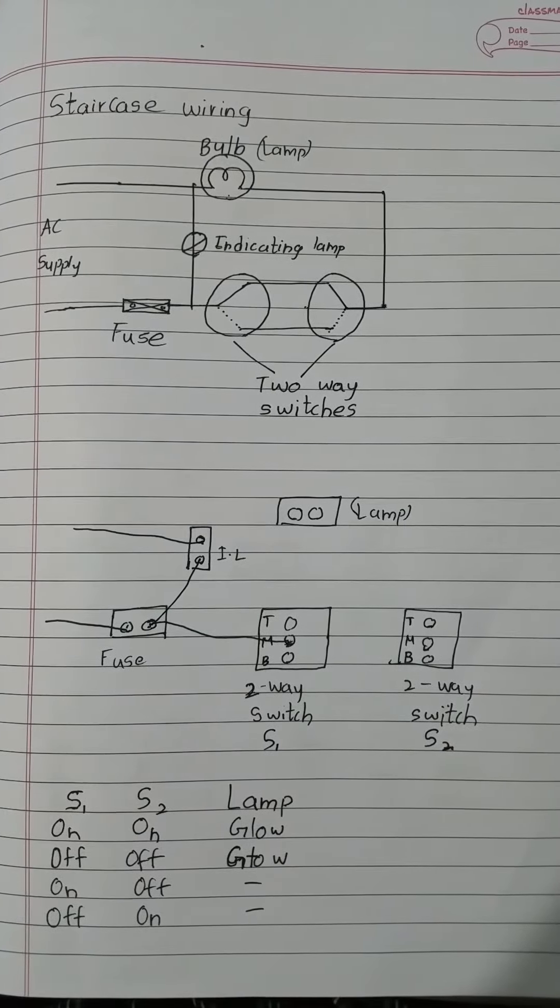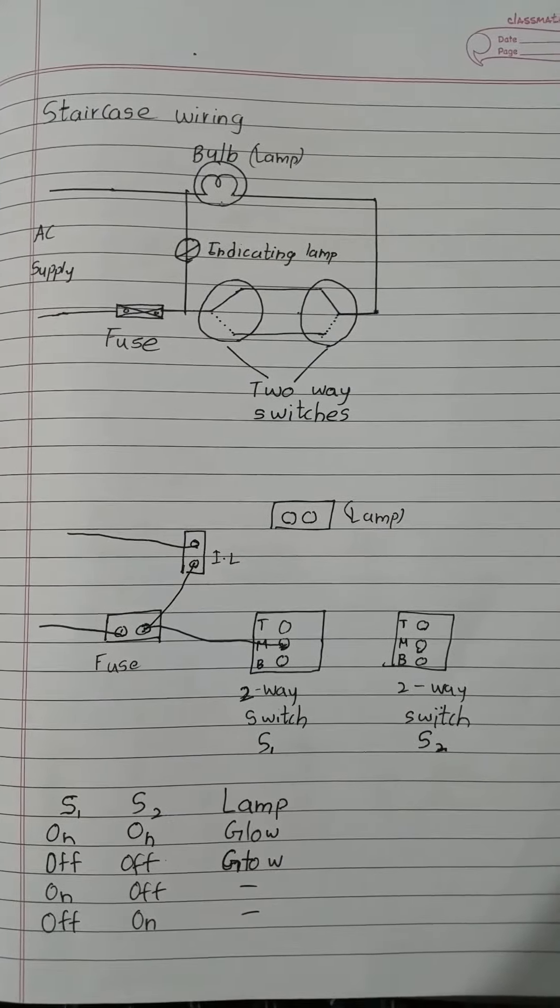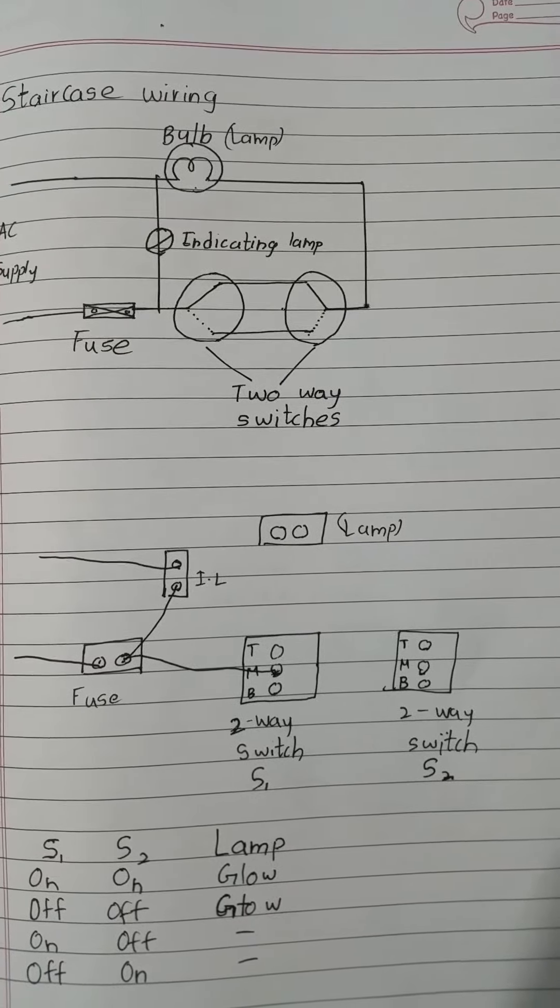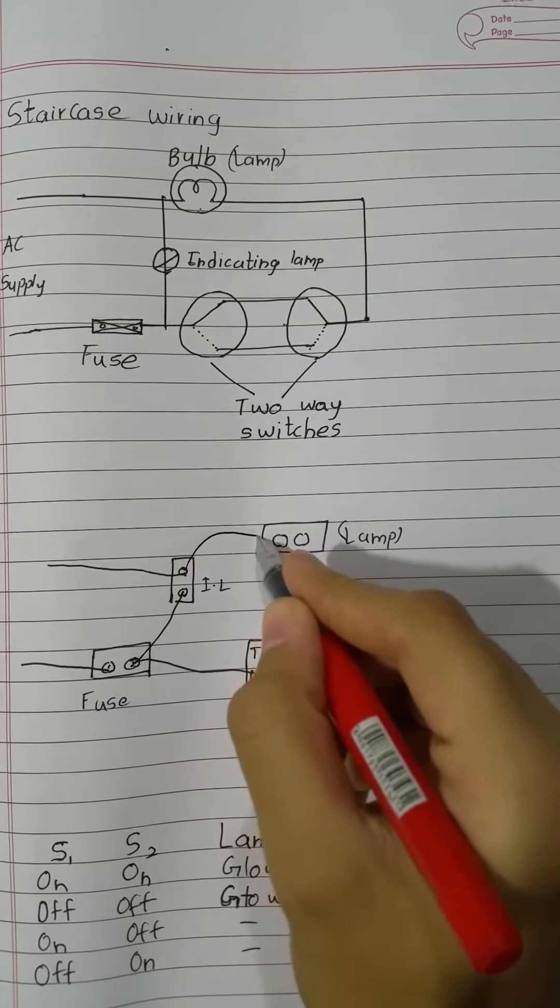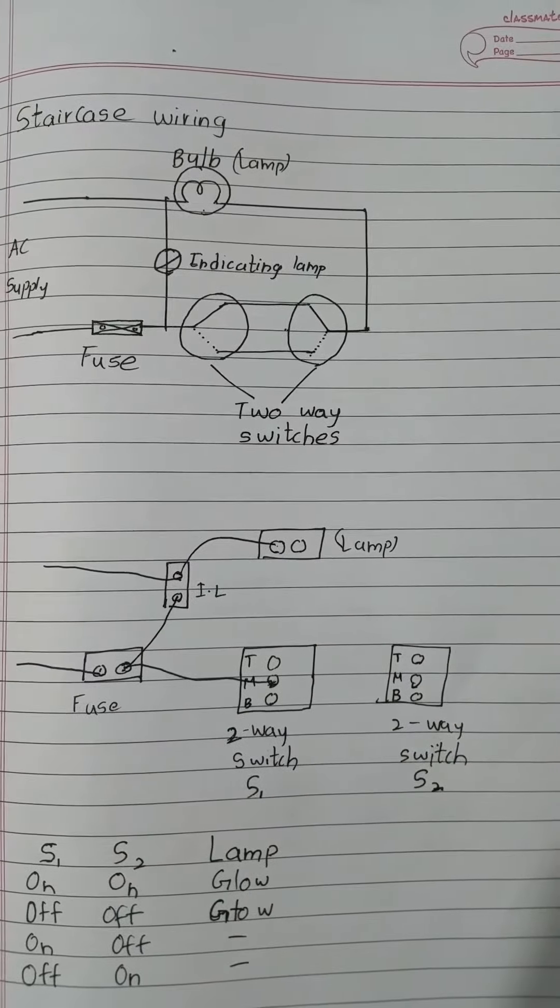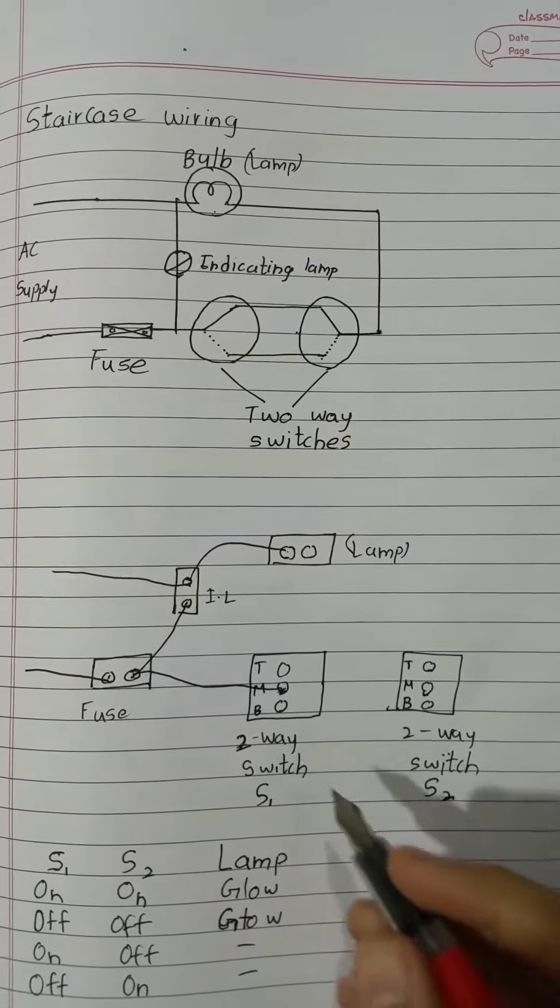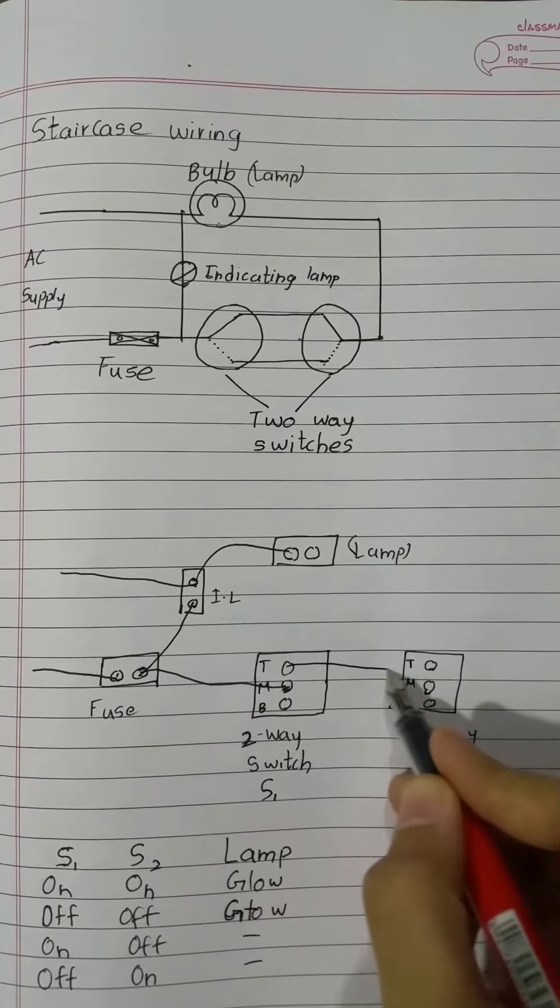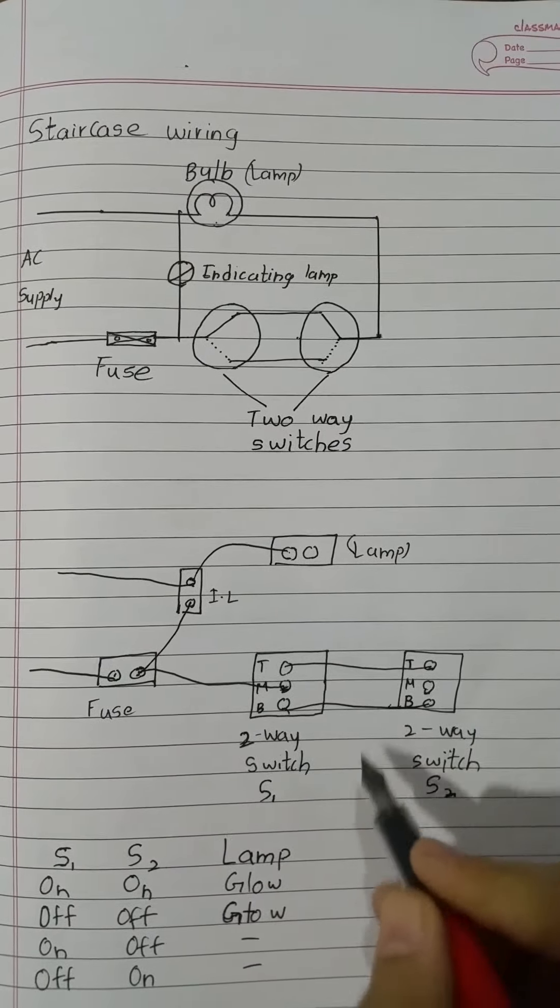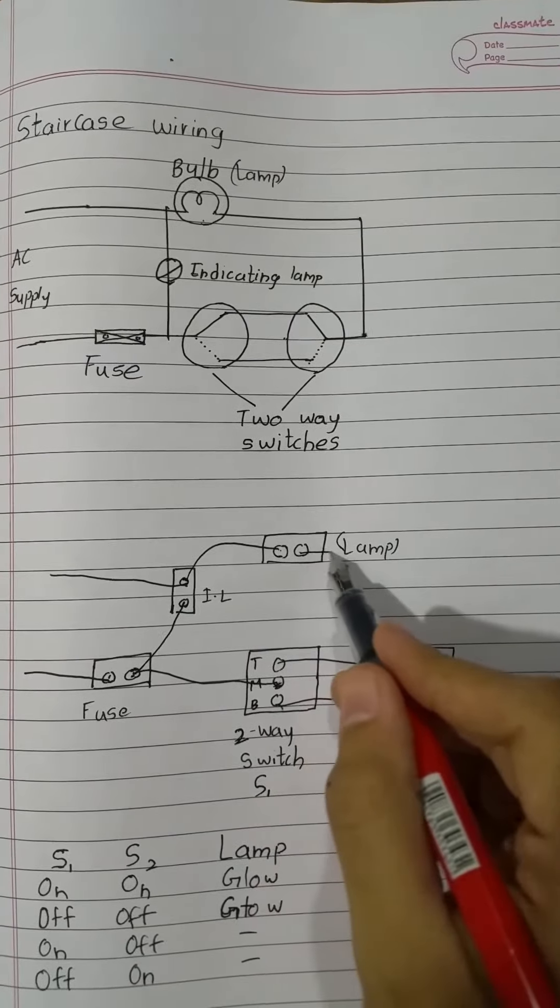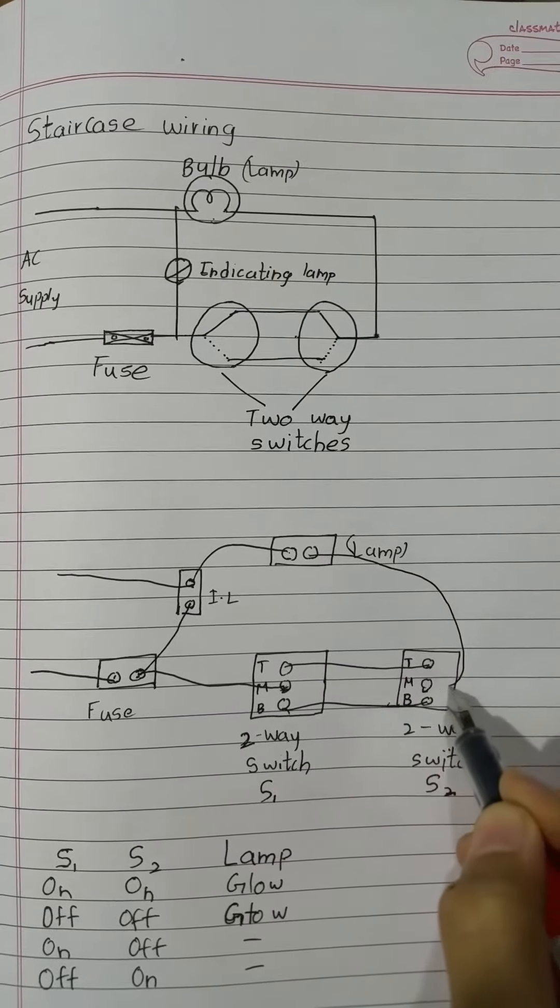the indicating lamp, and the same terminal will go to the first terminal of the lamp. Now we are joined top to top, bottom to bottom. The last second terminal of the lamp will go to the middle